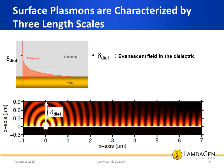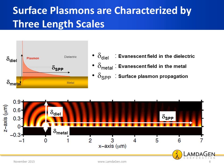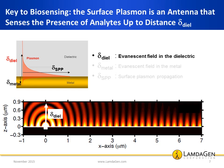First, the evanescent field length in the metal represents how far into the metal the surface plasmon wave reaches. The surface plasmon propagation distance represents how far from the excitation point the surface plasmon can travel along the metal or dielectric interface. For biosensing purposes, the surface plasmon acts as an antenna — it can sense the presence of analytes in solutions, here the dielectric, up to a distance of the evanescent field in the dielectric.